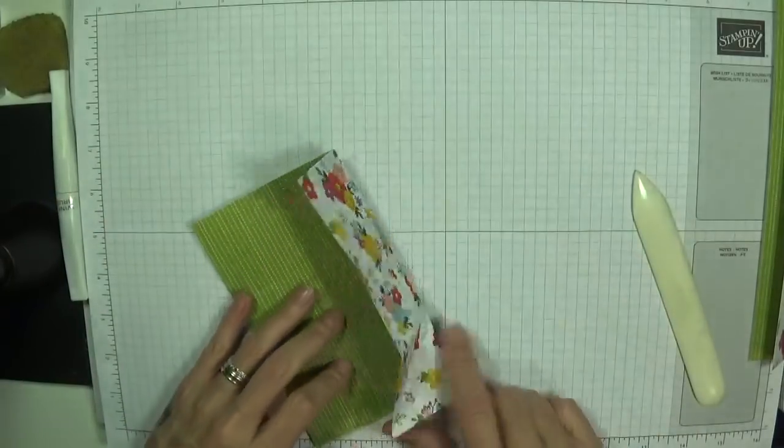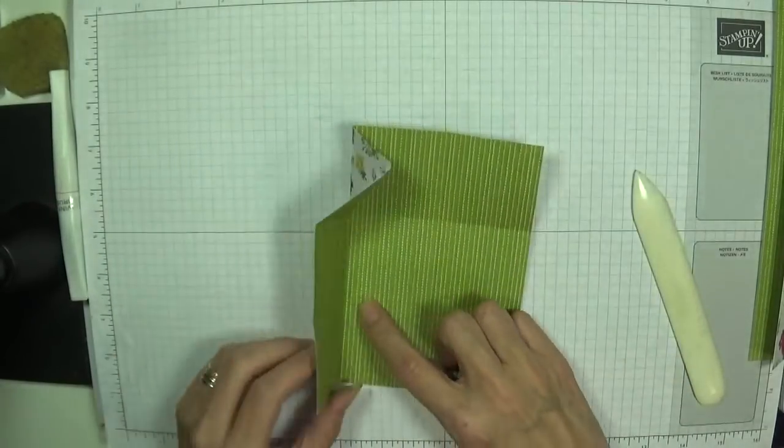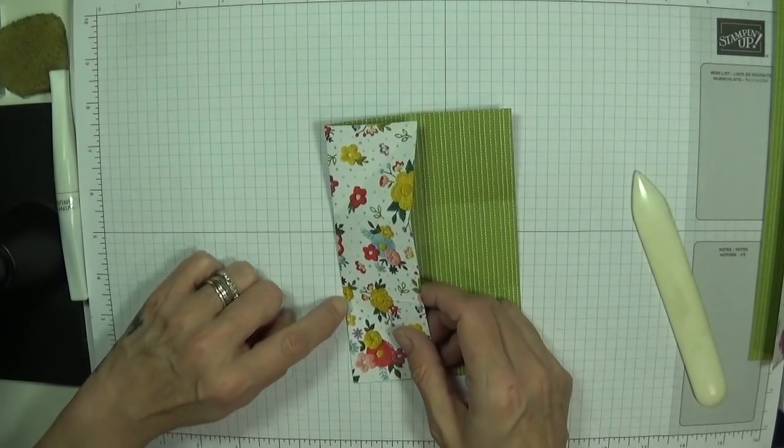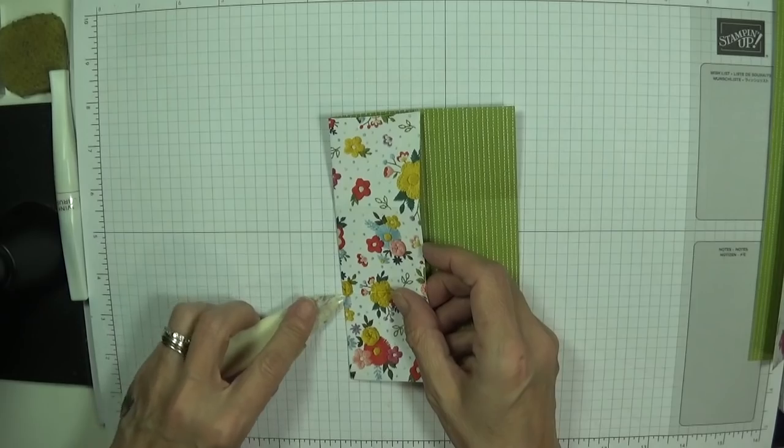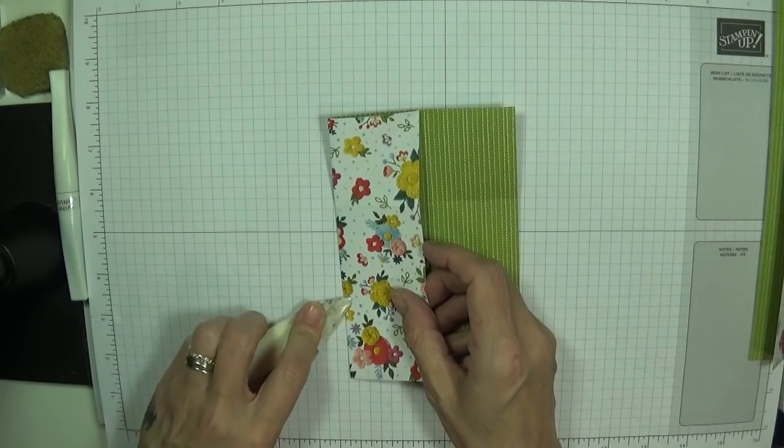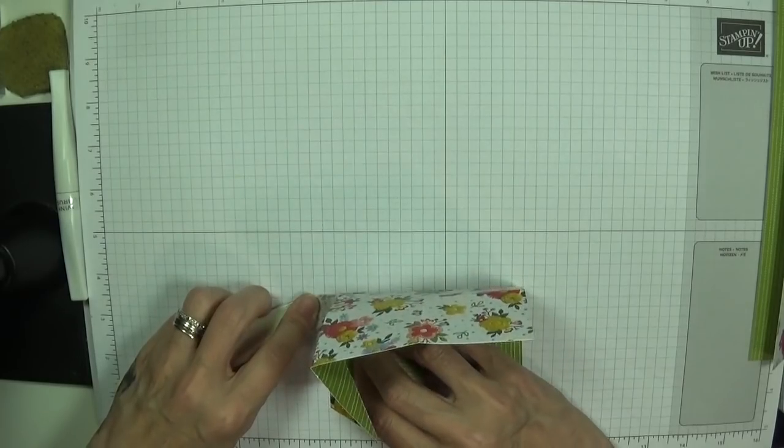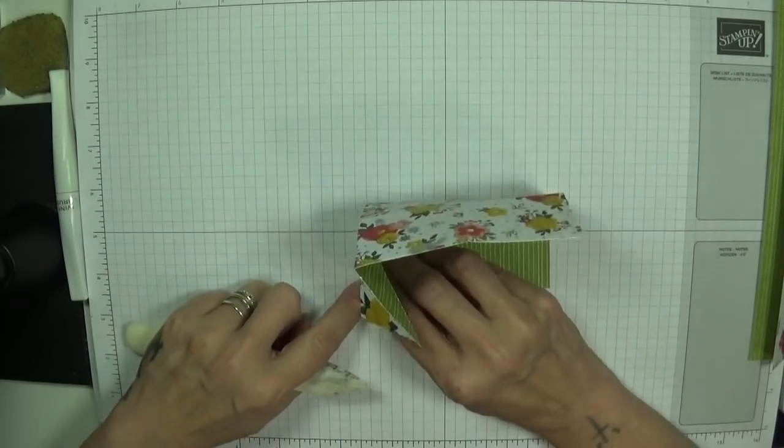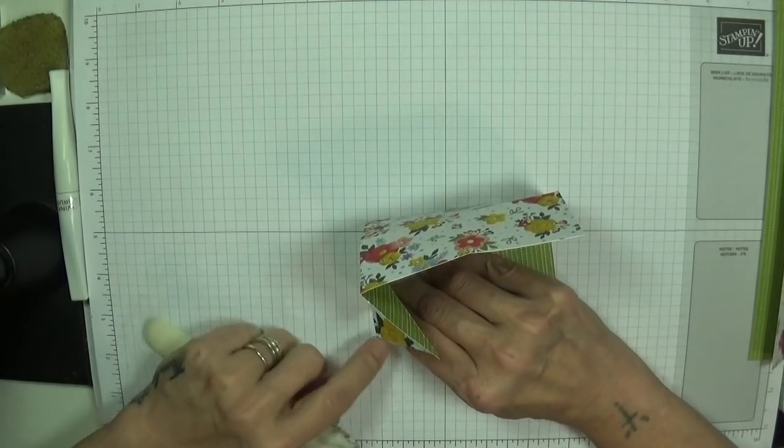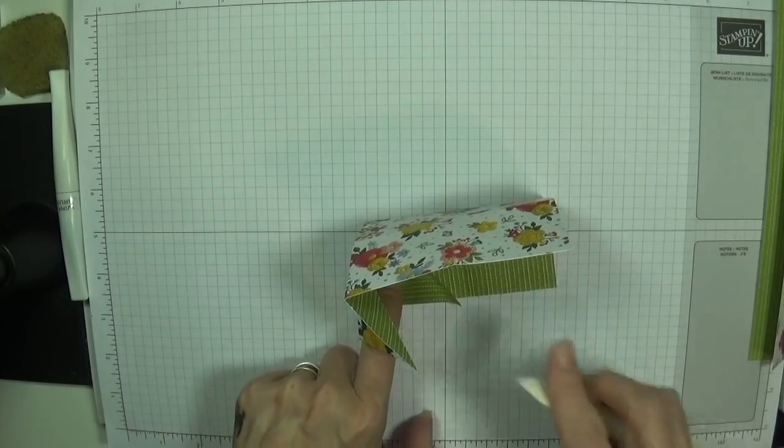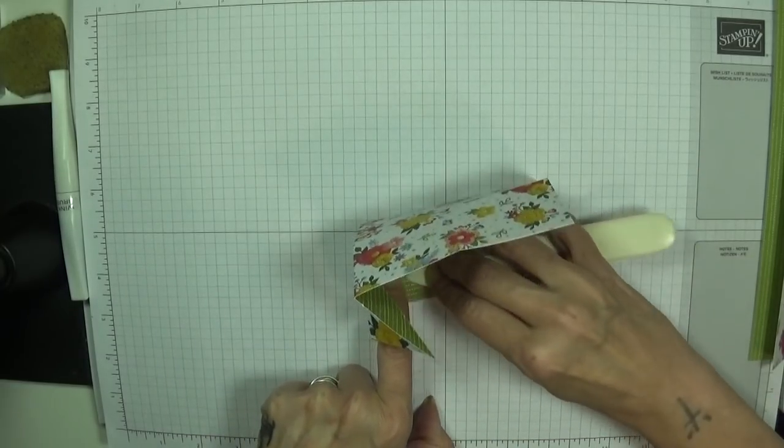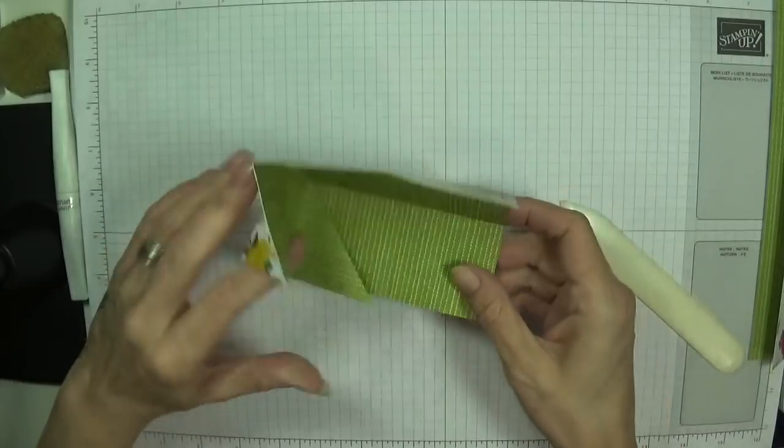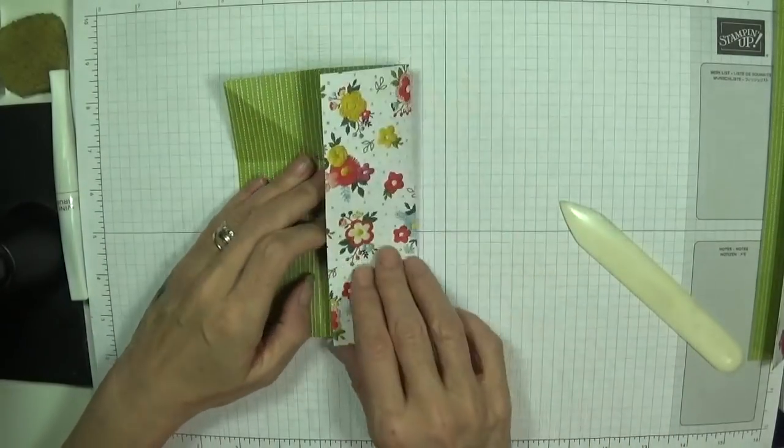So once you've done it that side, just turn it this side now. You're going to do it top and bottom. Again, push your nail, you can use your bone folder even, into the corner. Right along there. And fetch this up. And again, make sure it comes all the way up to the top of the score line. Open it out and then do the same this side.